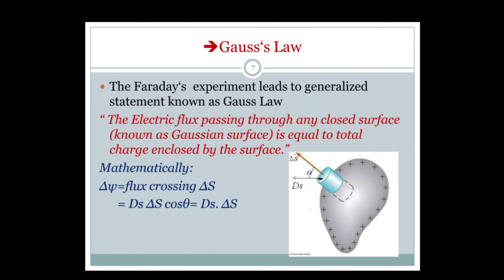Let us go for applications of Gauss law. The Gauss law is obtained from Faraday's experiment, which leads to the generalized statement known as Gauss law. The statement of Gauss law is: electric flux passing through any closed surface, known as a Gaussian surface, is equal to the total charge enclosed by that surface. Now we go for applications of Gauss law.